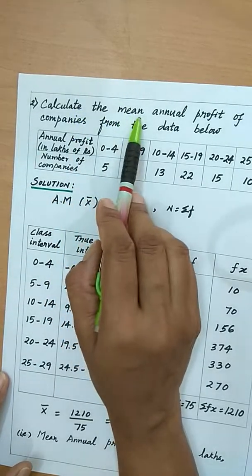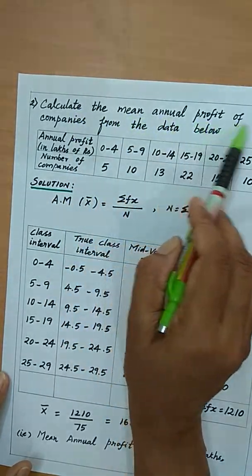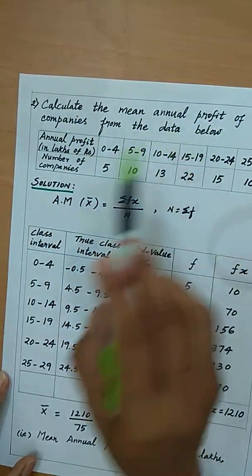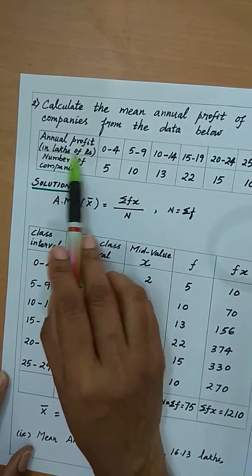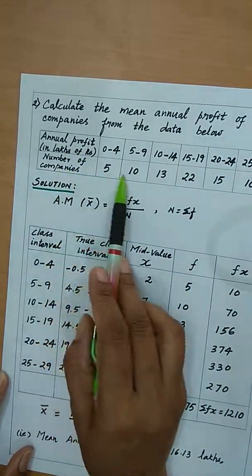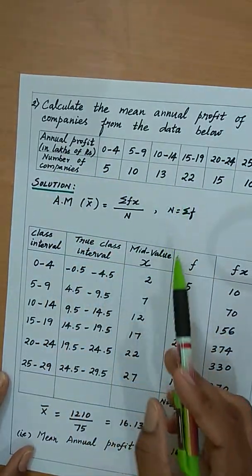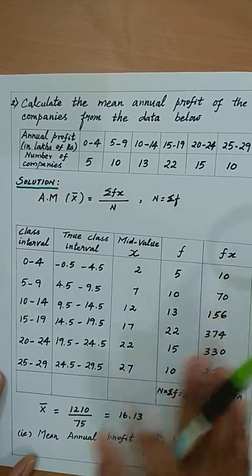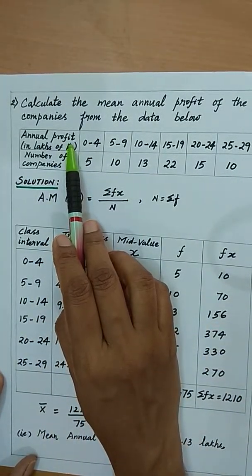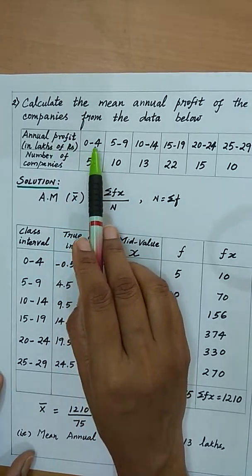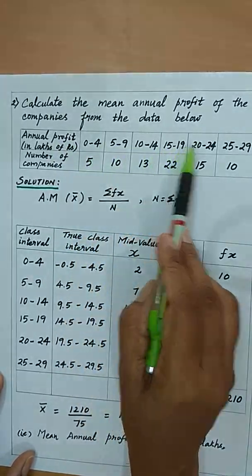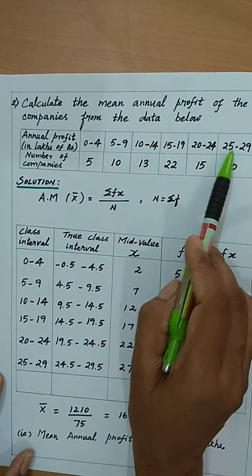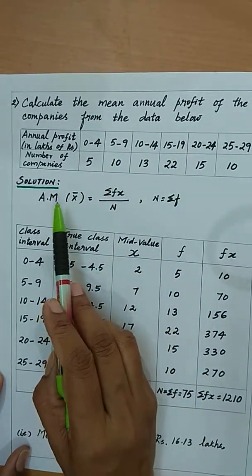Next problem: calculate the mean annual profit of companies from the data below, given annual profit in lakhs of rupees and number of companies. Here the annual profit is given as class intervals, and this is a problem under inclusive type class interval.